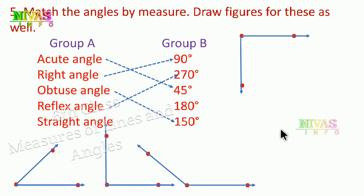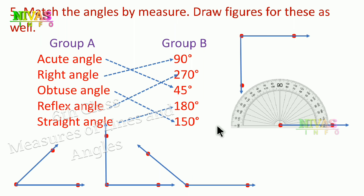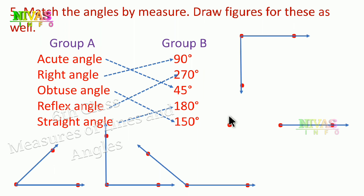Next, the straight angle. A straight angle is 180 degrees. Mark two points R and A to match, and draw 180 degrees. Using the protractor, the angle forms a straight line at 180 degrees.